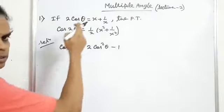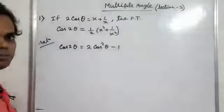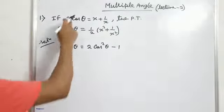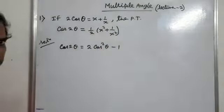If sin theta equals something given, then we have to start with the formula 1 minus 2 sin square theta. If tan theta equals something given, then we have to start with the formula for cos 2 theta in terms of tan theta.